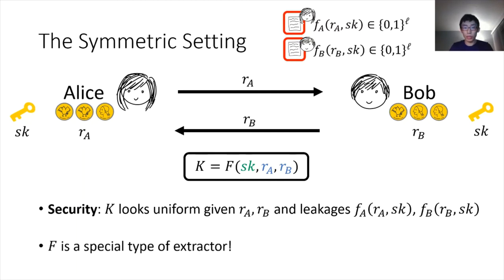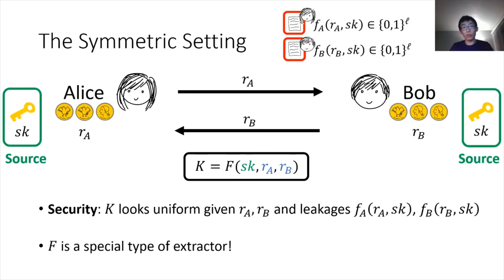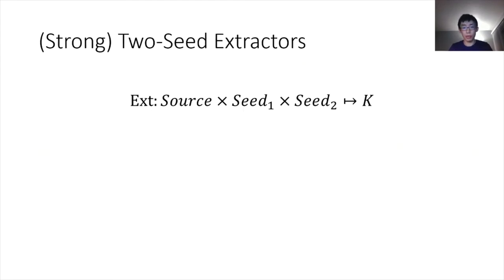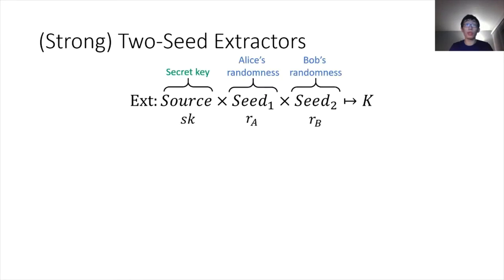We notice this has a very strong flavor of randomness extractors. We can consider the secret key SK to be the source of an extractor, and the random tapes that Alice and Bob use as the seeds. To be more precise, let me define what true-seed extractors are. A true-seed extractor takes three inputs: a source and two seeds. The source again will be the secret key and the seeds will be the random tapes of the parties.